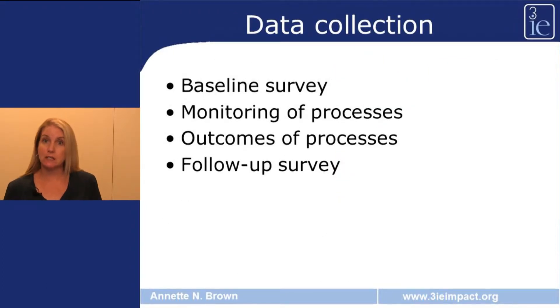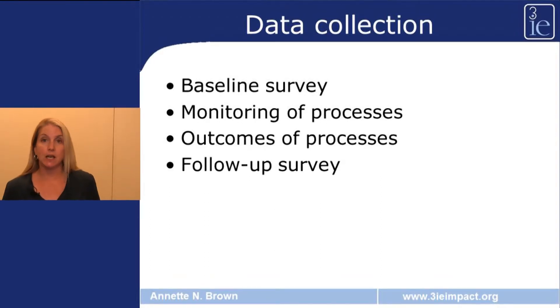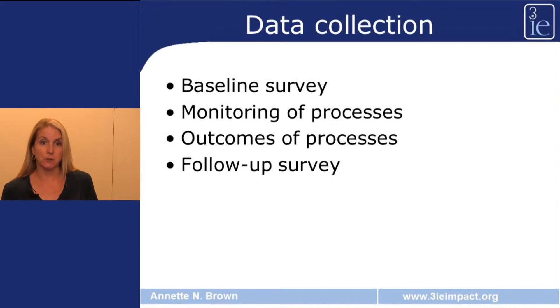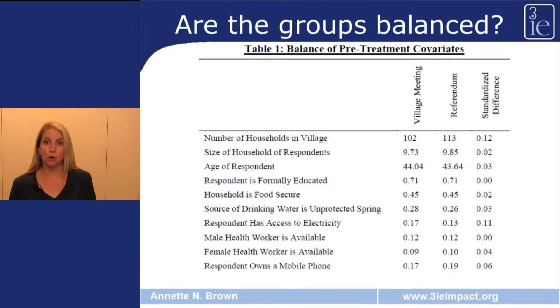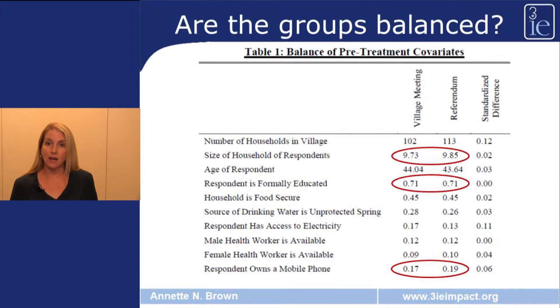They collected the following data: first, a baseline survey of individuals and households; they monitored the processes as they occurred in both referenda and consultation meetings; they collected information about which projects were selected; and they conducted a follow-up household survey. Even though we have an RCT, we always want to check baseline characteristics to see if the treatment and control groups are balanced. This table shows means for the village meeting and referendum groups — the baseline characteristics for treatment and control villages are very similar.